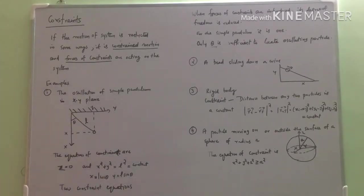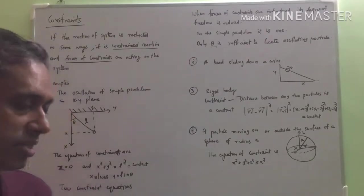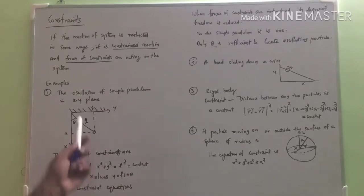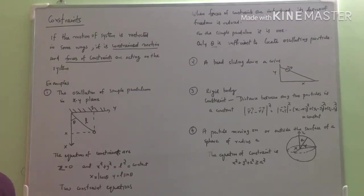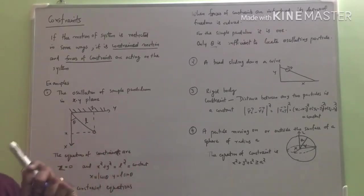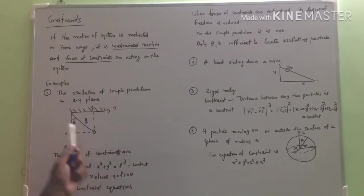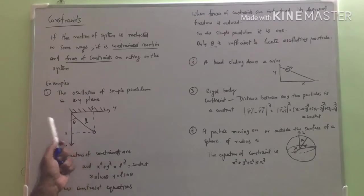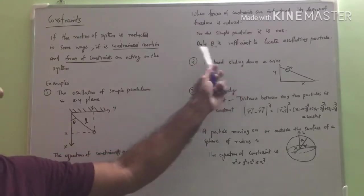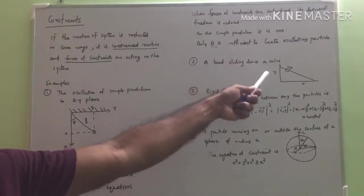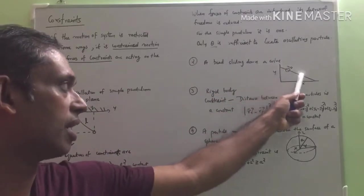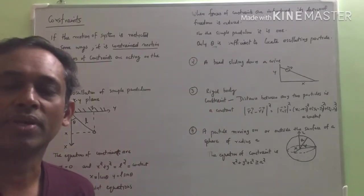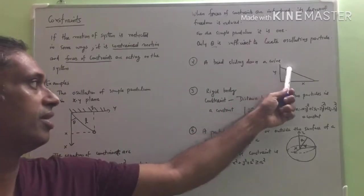The constraints are presented in the form of equations are called constraint equations. The degrees of freedom of the simple pendulum are reduced. The original degree of freedom is 3, and now it is becoming 1, because two constraints are acting. We need only one variable theta to represent the system. Now consider a system of a bead sliding down a wire — a bead is sliding down the wire. This is again an example of constrained motion; the bead can move only over the wire.